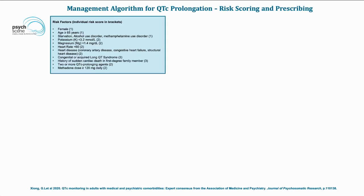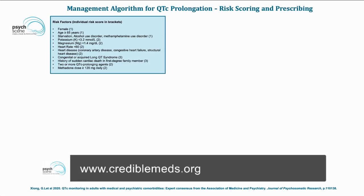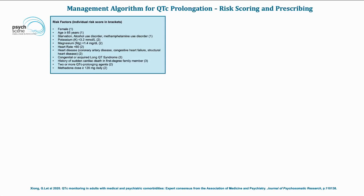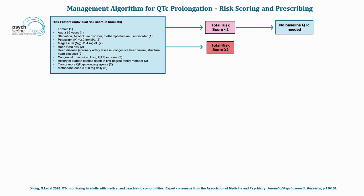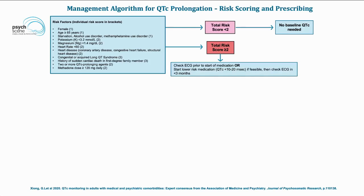When faced with QTc prolongation, the first step is to assess risk factors and calculate a risk score. Algorithms such as the Risk PATH algorithm are available, and CredibleMeds is a useful source to identify QTc-prolonging medications. If the total risk score is less than two, no baseline QTc is needed. If the score is greater than or equal to two, check an ECG prior to starting medication or start a lower-risk medication — one associated with a QTc prolongation risk of less than 10 to 20 milliseconds.